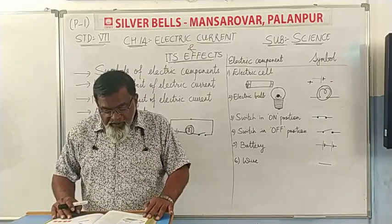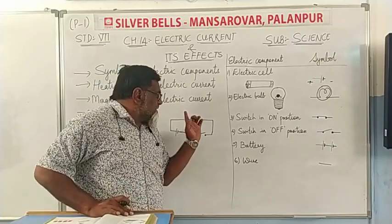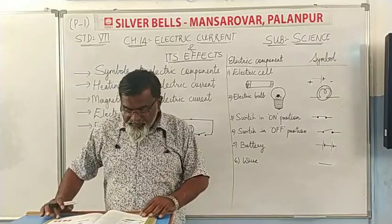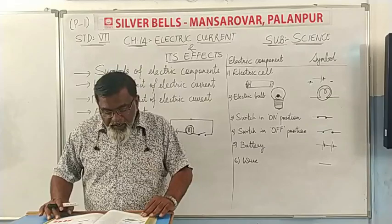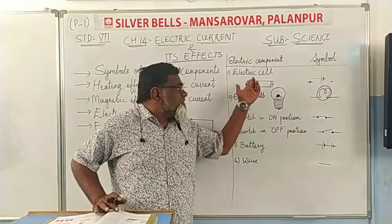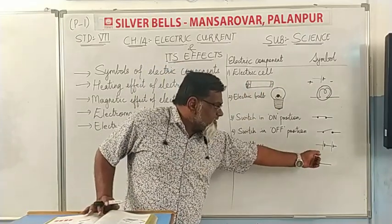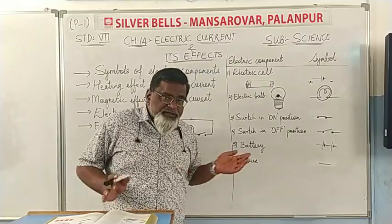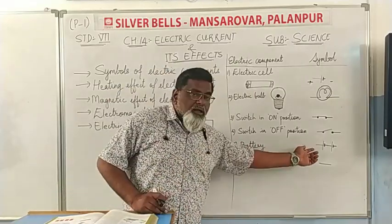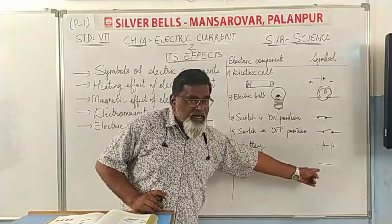The wires used to connect various components in a circuit are represented by lines. In the table, a battery and its symbol are shown. A battery means two or more electric cells connected together for larger voltage. The battery symbol shows multiple cell symbols together, and the wire symbol is just a line.